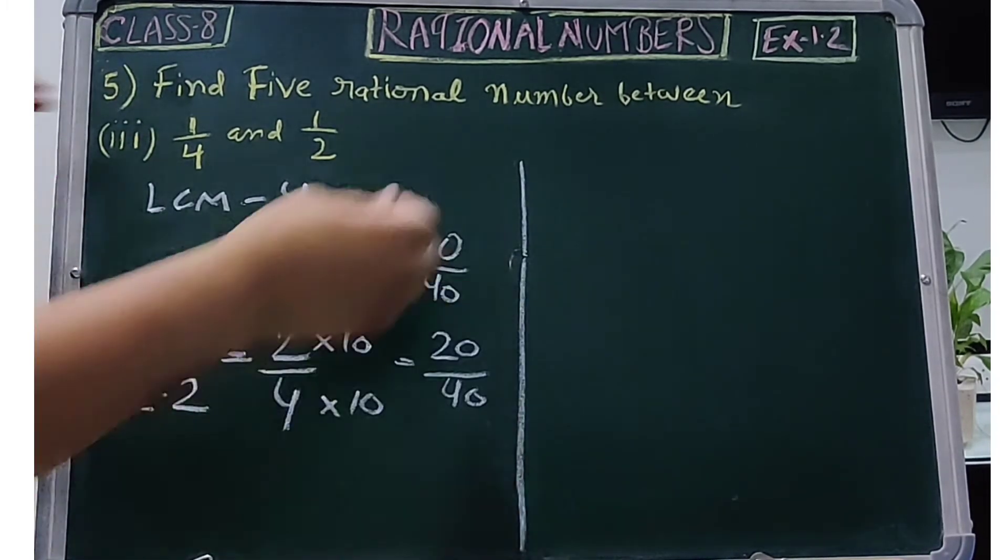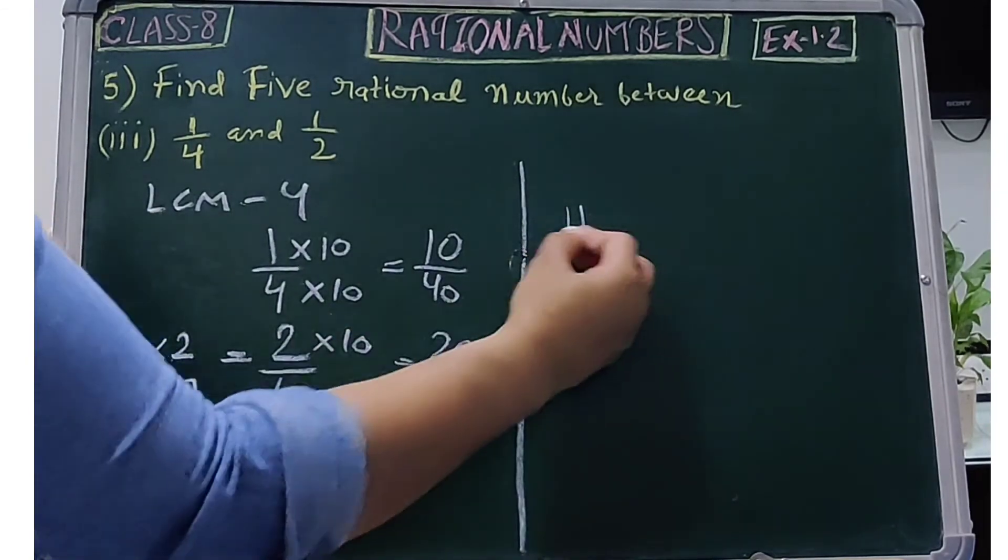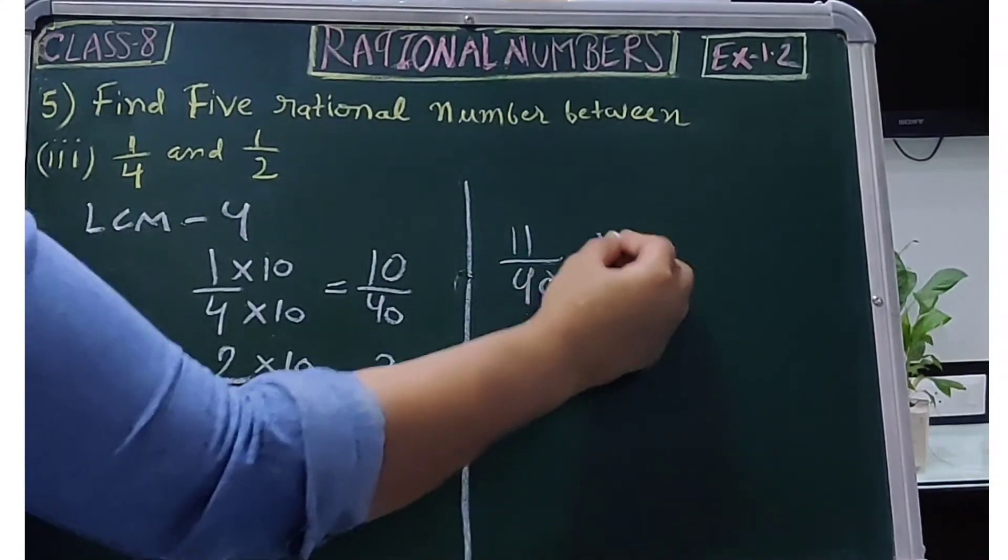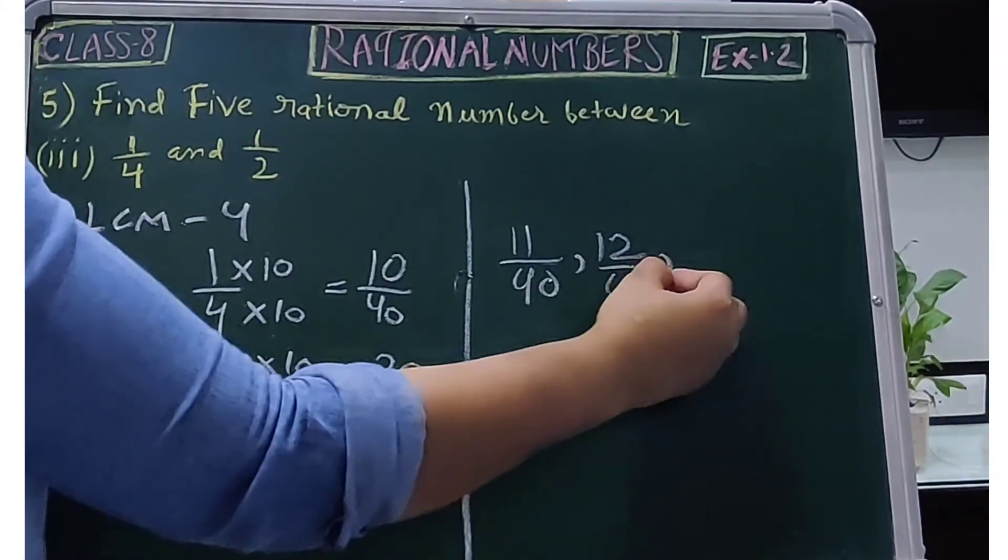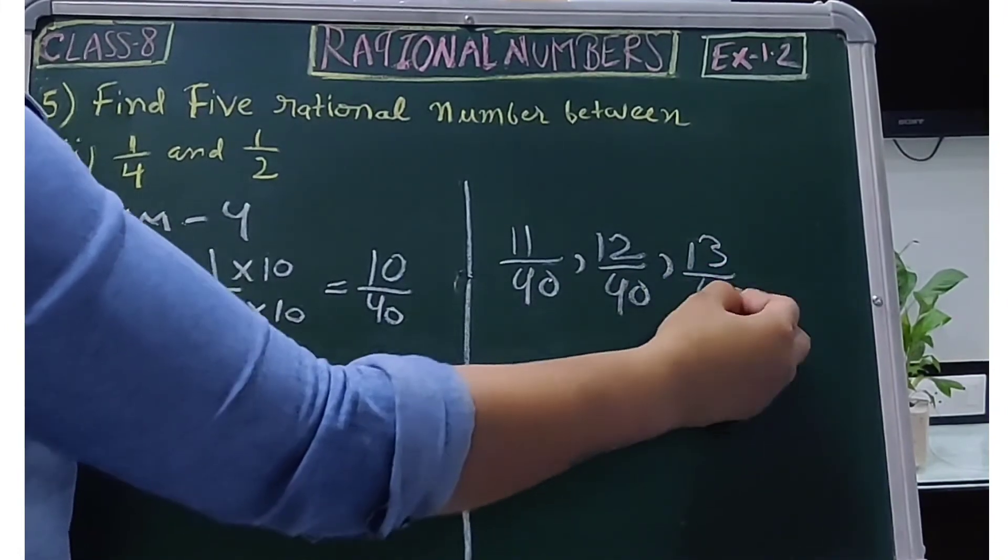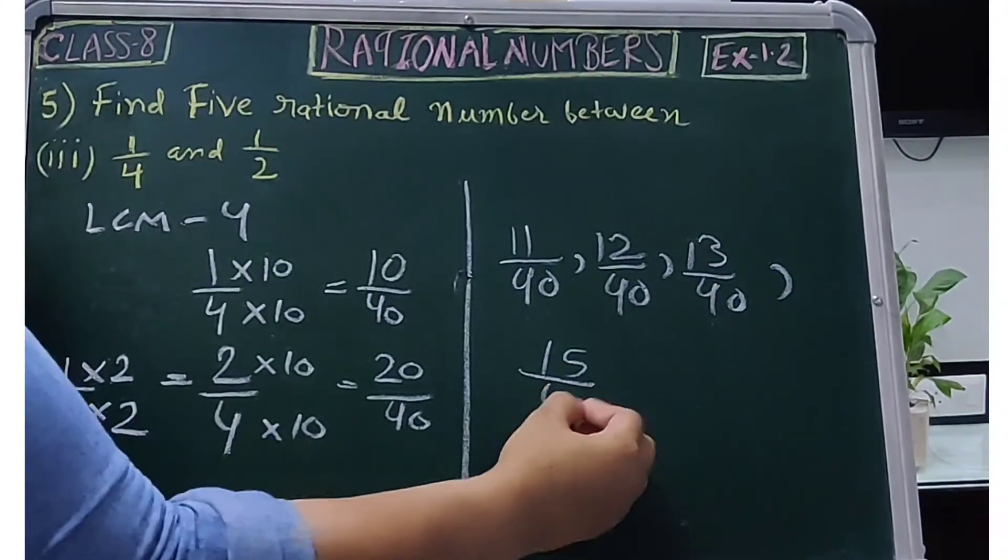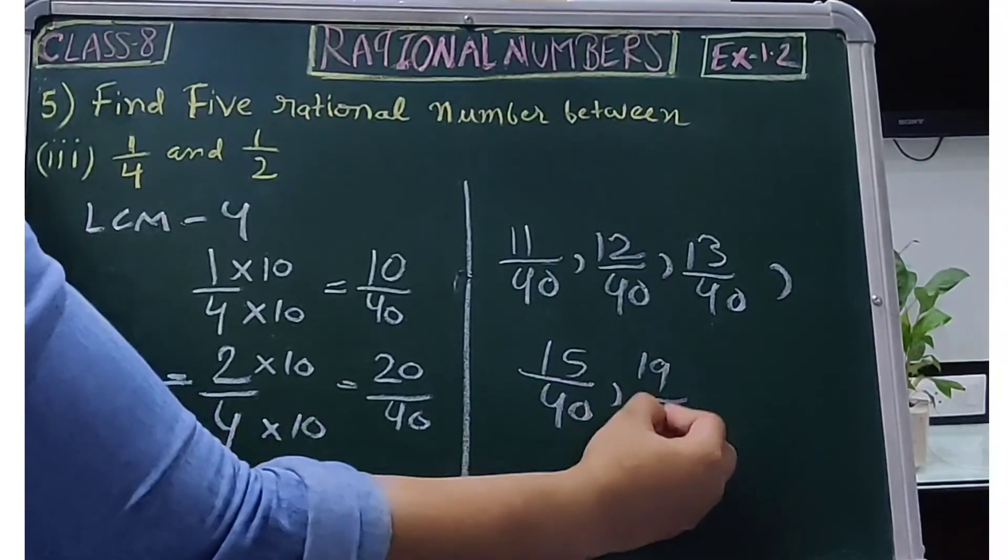Now we can easily write down 5 rational numbers between these: 11/40, 12/40, 13/40, 15/40, 19/40.